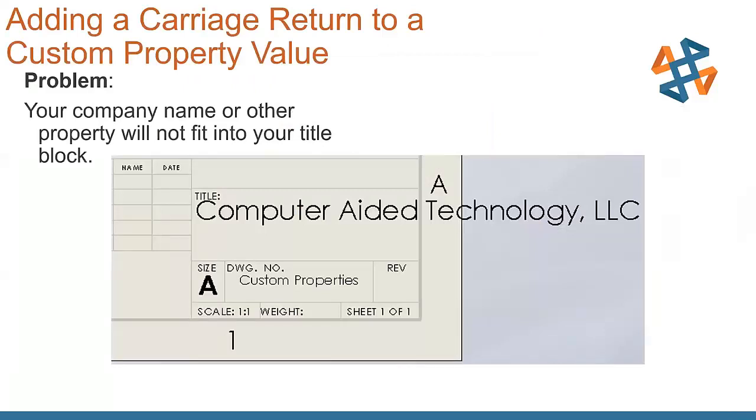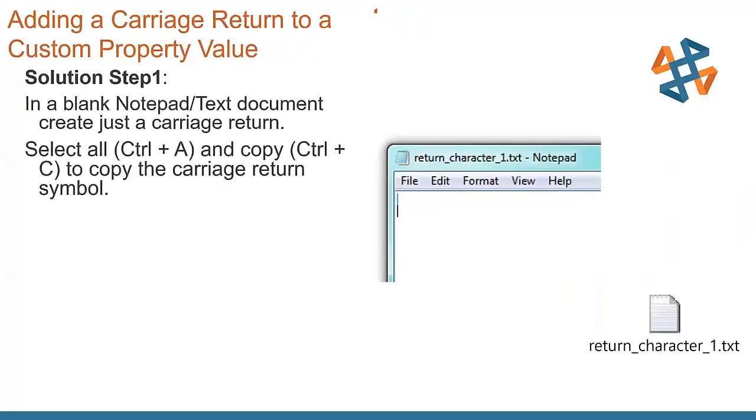Next one that we have here, adding a carriage return to a custom property value. The problem that we have here is your company name or other custom property will not fit into your title block. Now we all know SolidWorks has the ability to take that text box there and we can drag it and change it, and it will auto-wrap things to fit that box. But what if the item that we have doesn't conform to what we're looking for or we always want it to be set up a specific way, such as our company name?